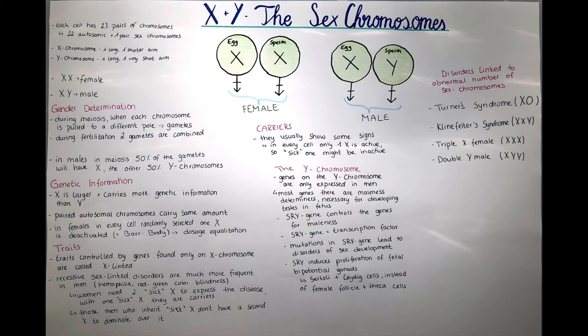The X and the Y chromosome are part of the whole human genome and each cell has 23 pairs of chromosomes. 22 of those are autosomal and one pair is the sex chromosomes. Females have X and X as sex chromosomes and males have X and a Y chromosome. The X and the Y chromosome are responsible for gender determination, that's why they're called sex chromosomes.